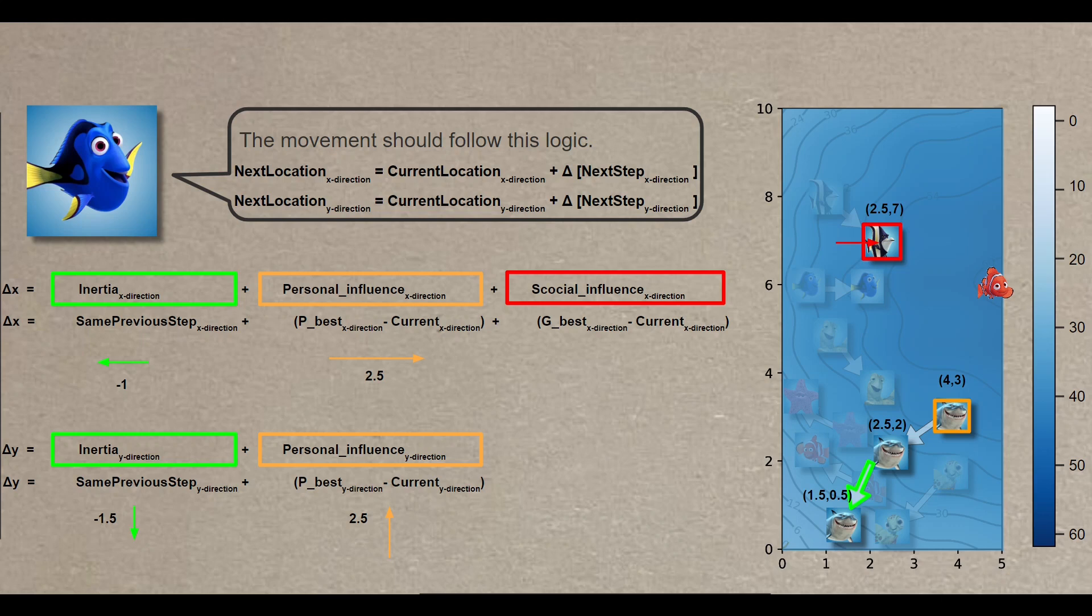Essentially, this implies that the subsequent step should be influenced by the best location ever achieved by the entire swarm, the deepest point that the swarm found, the red square in this case. And this is determined by calculating the difference between the global best, the red square, and the current location. So it's 2.5 minus 1.5 equal 1 to the right. Similarly, in the y direction, it's 7 minus 0.5 equal 6.5 upwards.